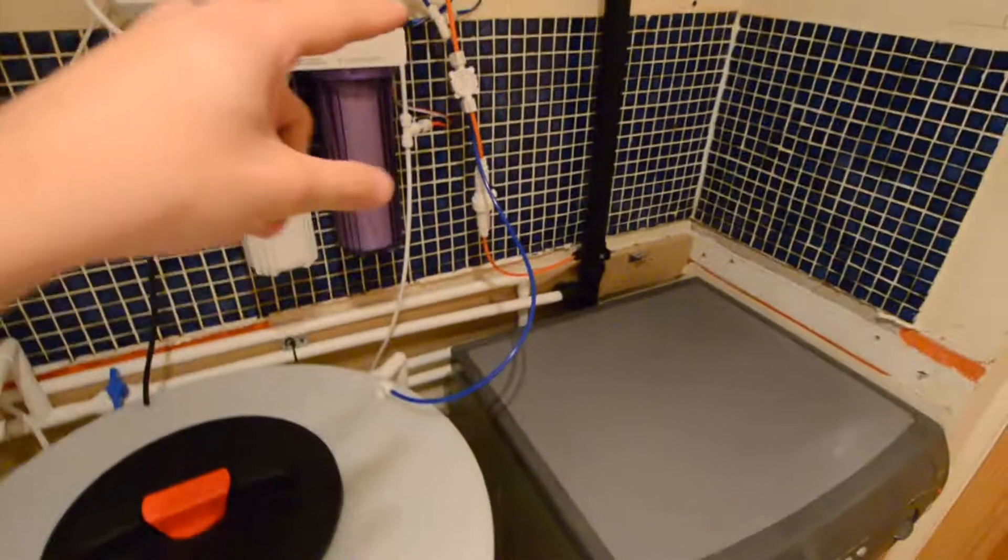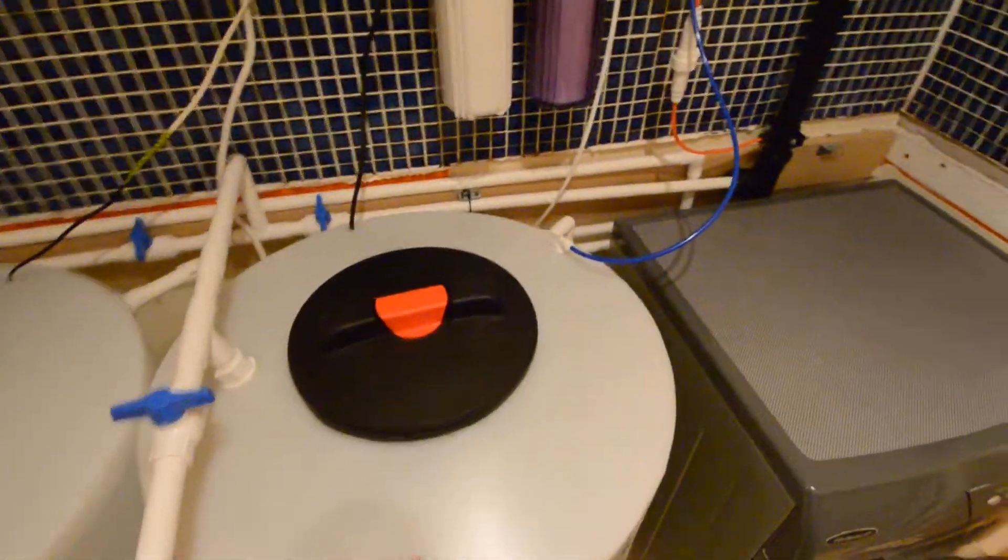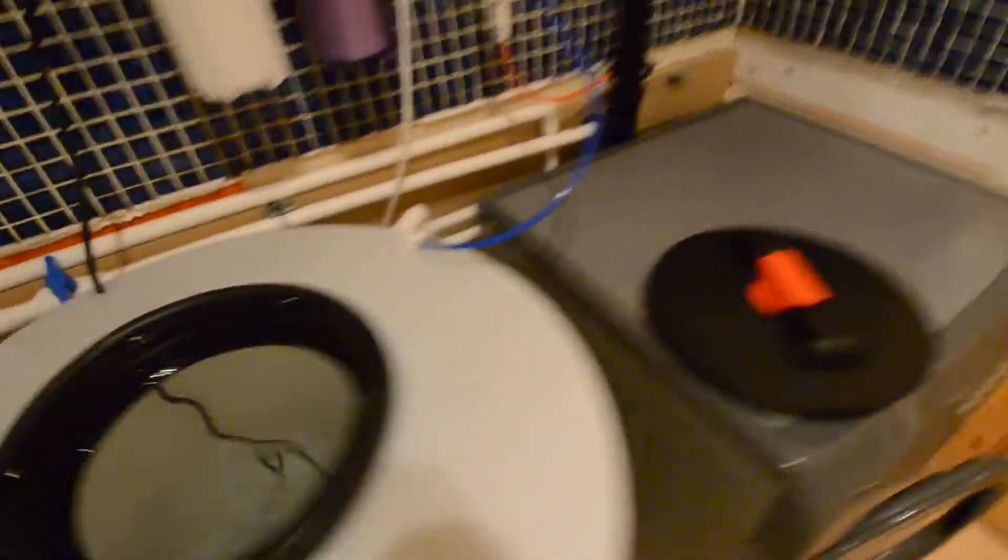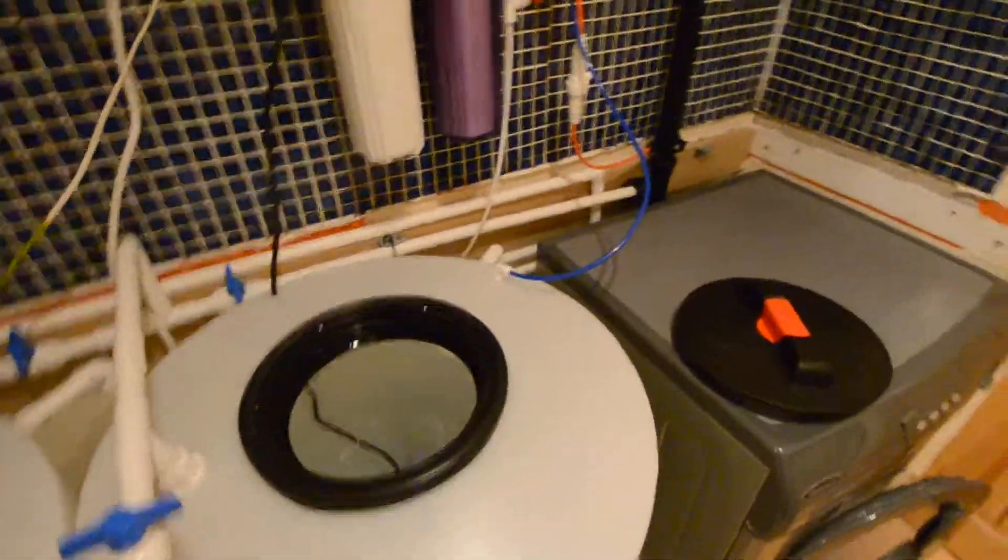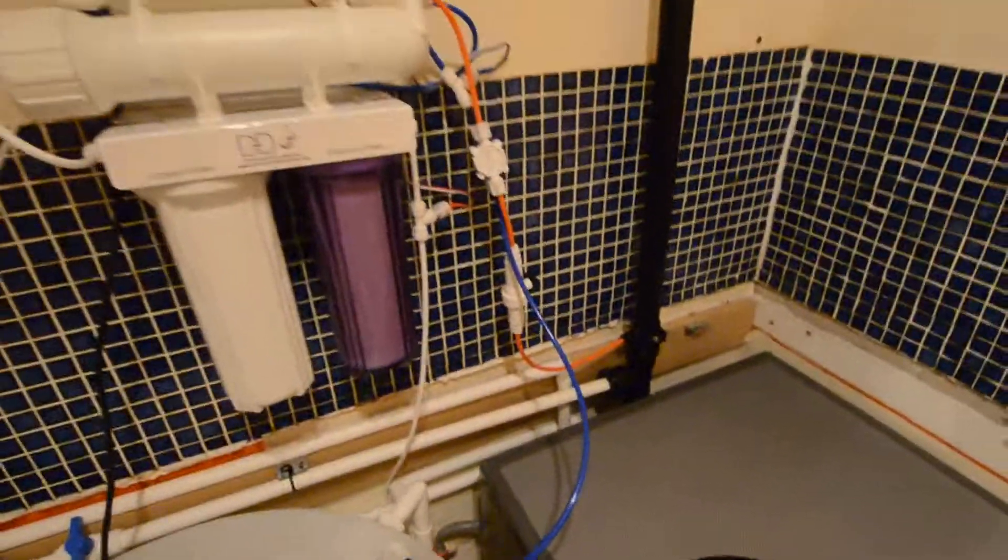Basically, as I talked about before, this RO unit feeds my main RO tank storage tank with a float valve installed here. I don't know if you saw in the last video, I drained this tank a little bit so you can hear that the RO unit is actually working now.